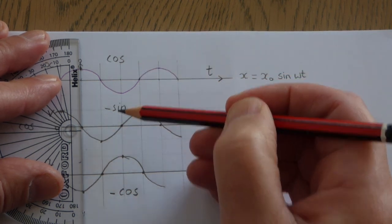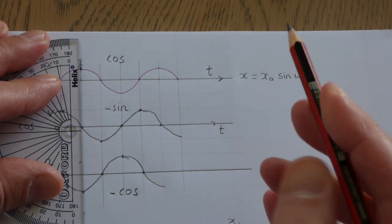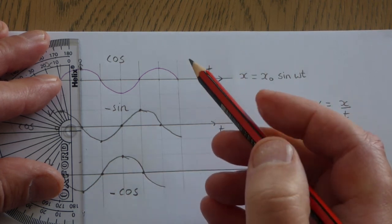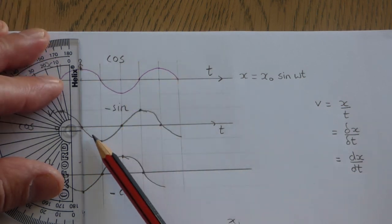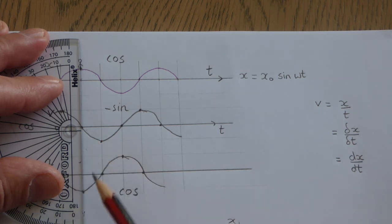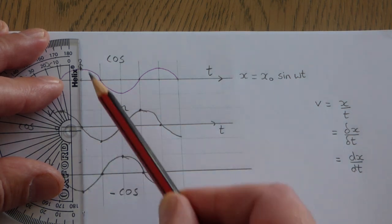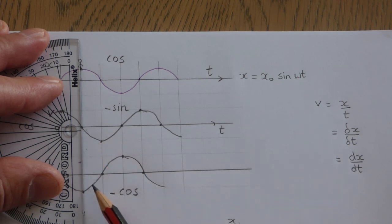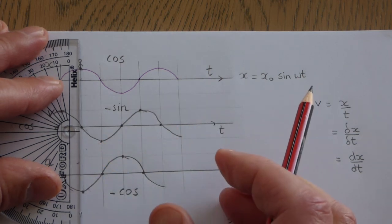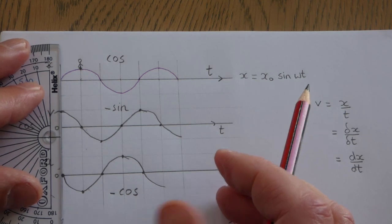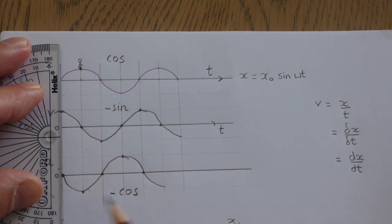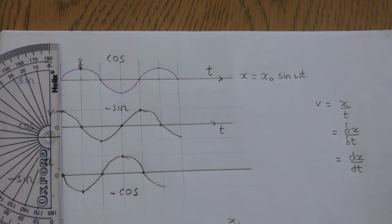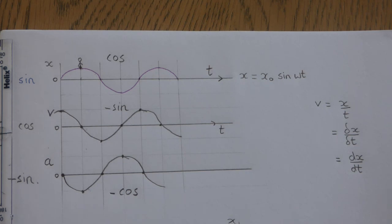In exam questions, you'll be given a graph — possibly a displacement-time graph — and you'll be expected to draw the velocity-time graph and then the acceleration-time graph below it. If you start with a sine curve, the sequence is: sine → cosine → negative sine. Those are the graphs representing displacement, velocity, and acceleration in simple harmonic motion.